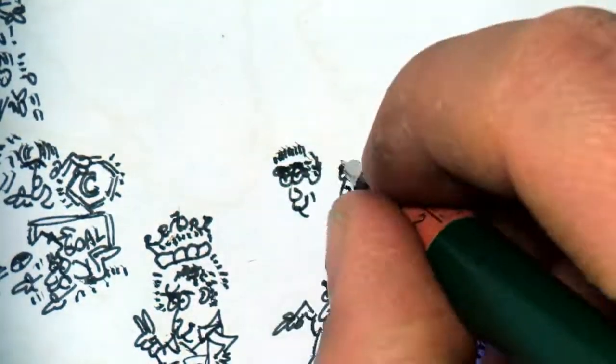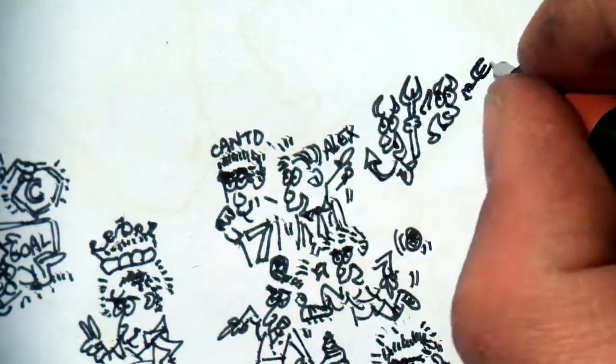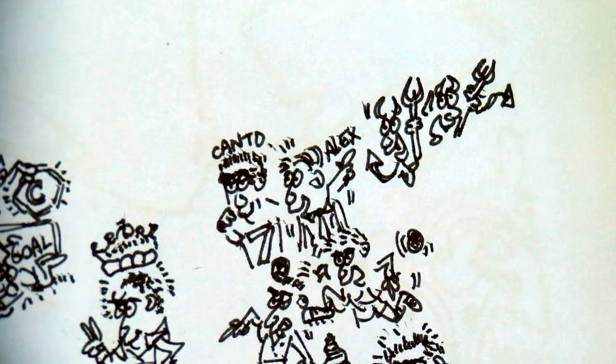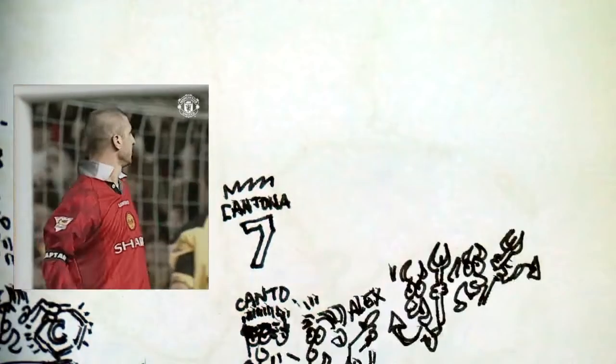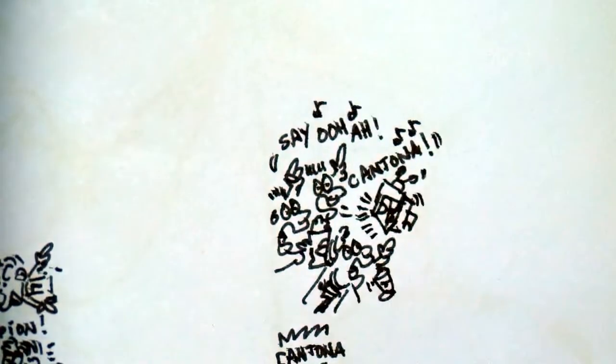He is recruited by Alex Ferguson at Manchester United. It is the beginning of Cantomania. The number 7 jersey becomes a hot-selling product, and Eric Cantona even has his own song.